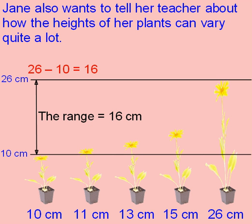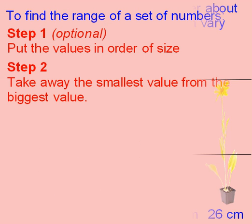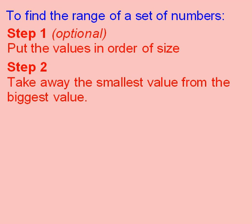Remember, the range is not a type of average. It's the largest value take away the smallest value, and it shows how the numbers can vary. So to find the range, we take the smallest value from the biggest value. Some people like to put the values in order first because this helps you find the smallest and biggest values.